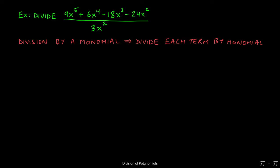Whenever we have to divide anything by a monomial, we always divide each term by the monomial, which is to say that we divide 9x to the fifth by 3x squared.